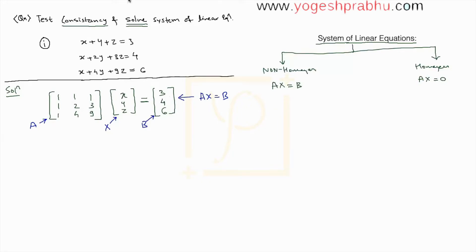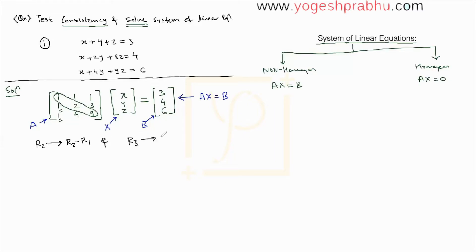To solve this system, we reduce the rows of the matrix. Focus on matrix A — below the diagonal we need to make all elements zero. Our strategy is to make these two elements zero using row operations. The first set of row operations: R2 becomes R2 minus R1. This works because 1 minus 1 gives 0. We also perform R3 becomes R3 minus R1, so these two positions become zero.